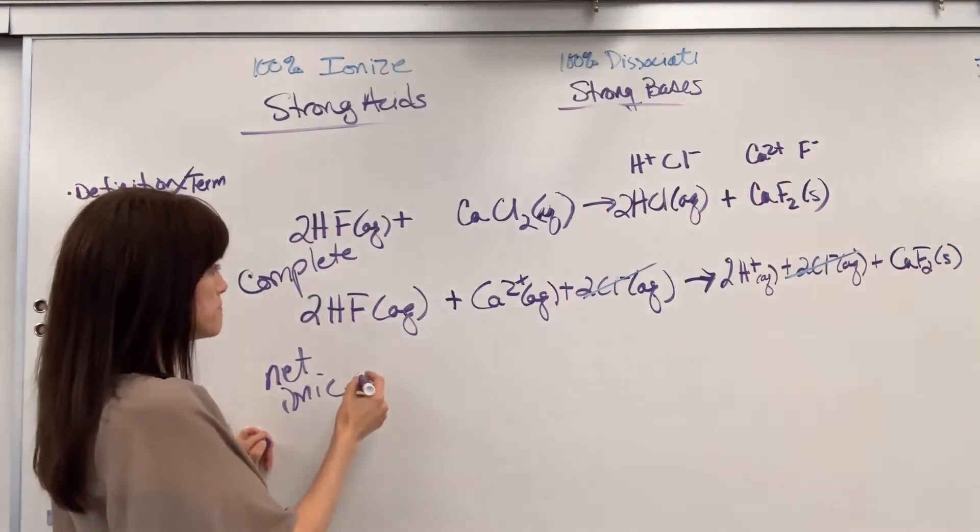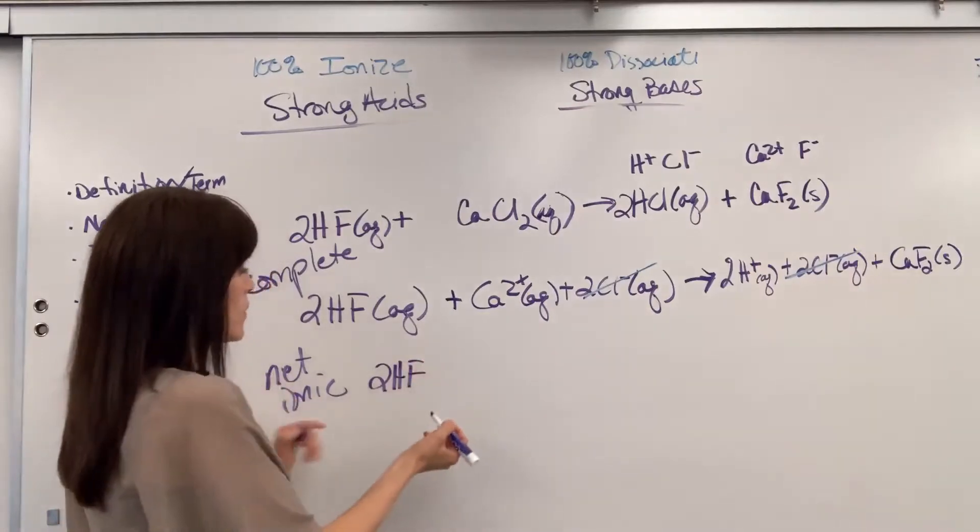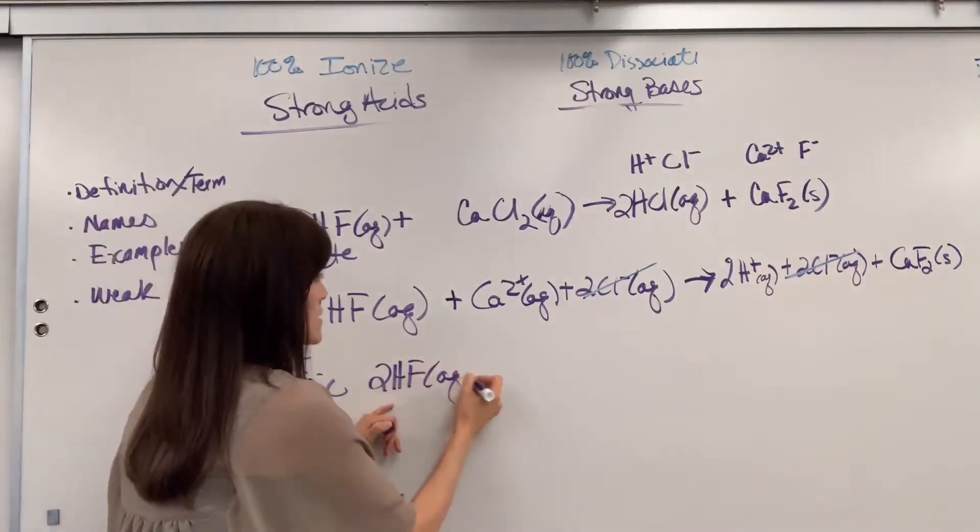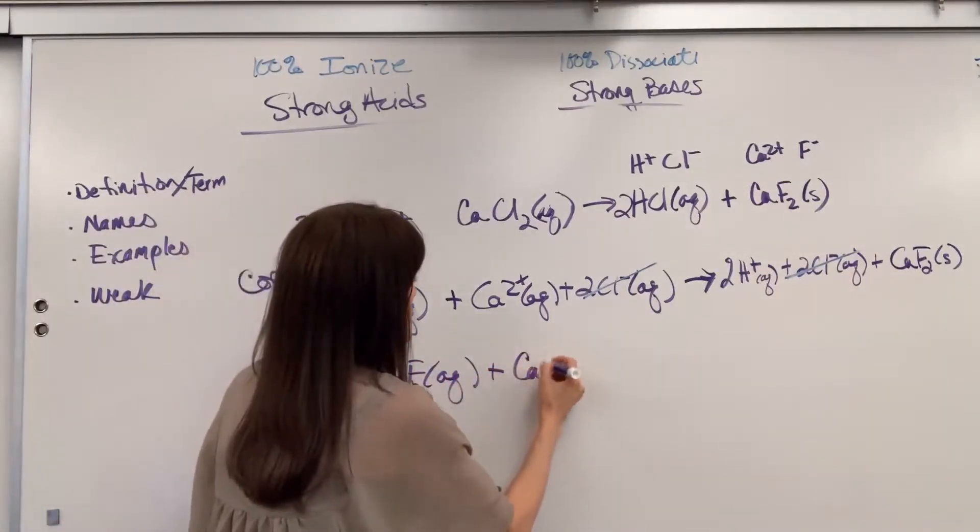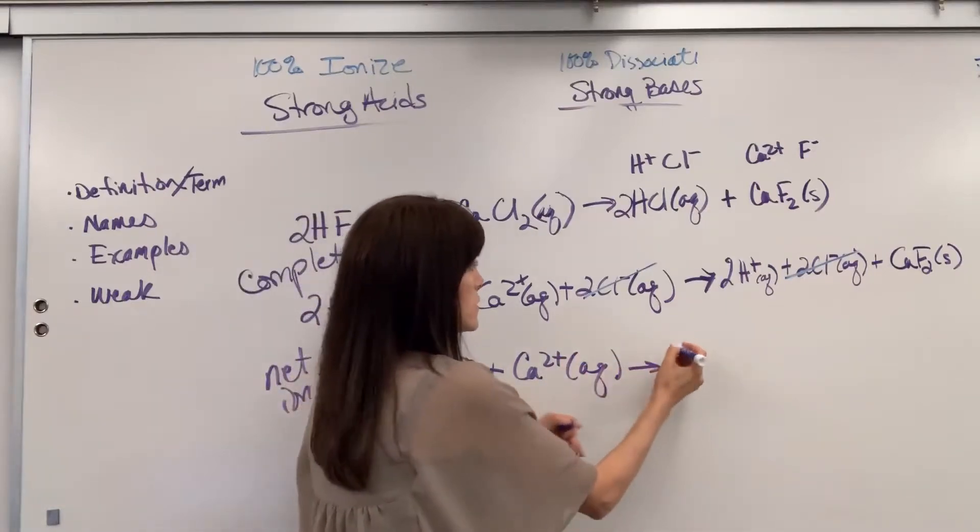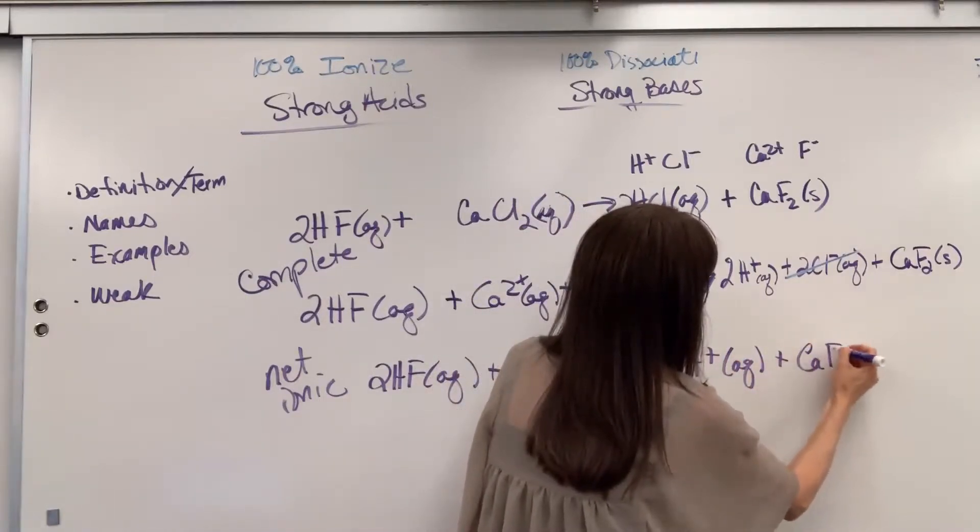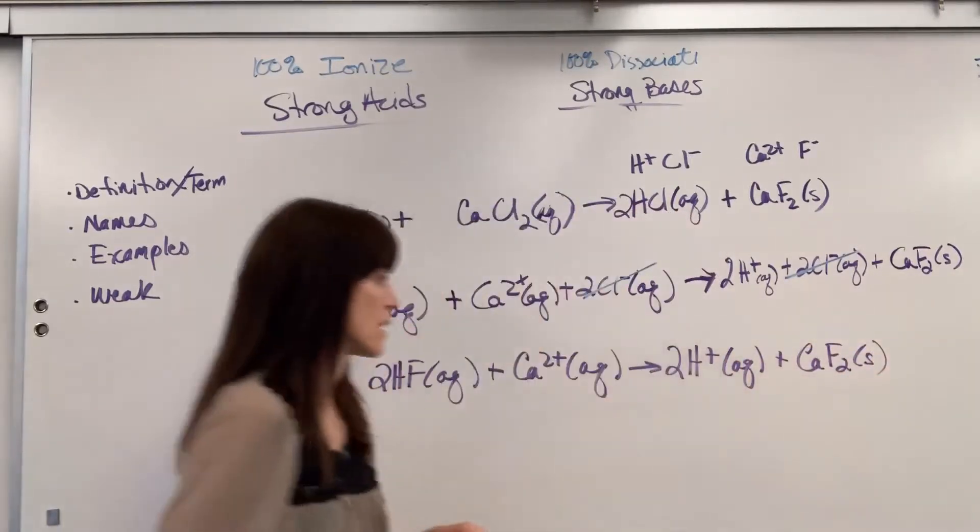This is going to be whatever's left over: 2 moles of the hydrofluoric acid, plus 1 mole of the calcium ion, yields 2 moles of hydrogen ion, plus 1 mole of calcium fluoride solid.